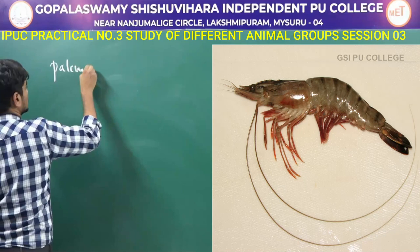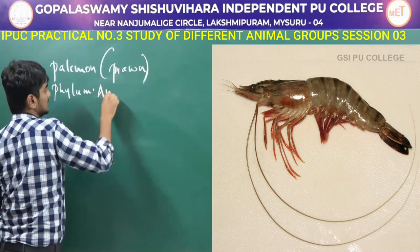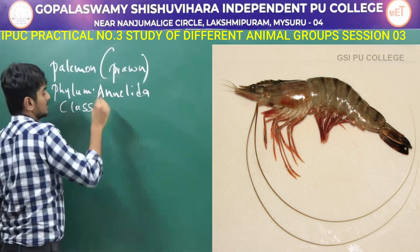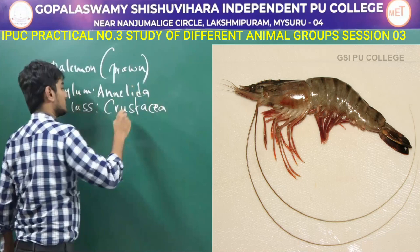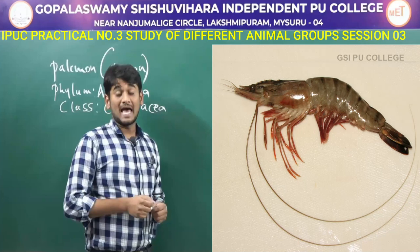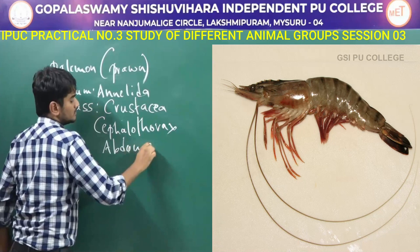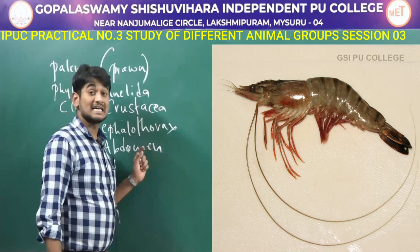The next one is Palemon, commonly called as prawn. Prawn comes under the phylum Annelida and class Crustacea. In the right side we can observe the picture of prawn. The body is variable in size and laterally compressed. The body is divided into an anterior cephalothorax and a posterior abdomen. The cephalothorax has a chitinous cover called the carapace.